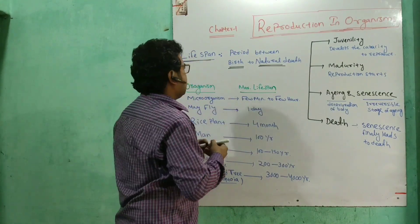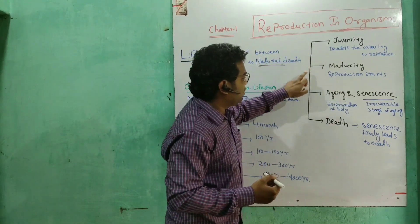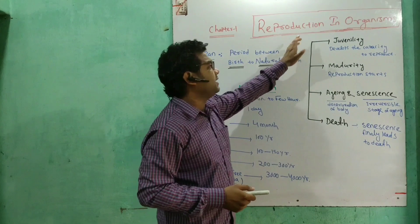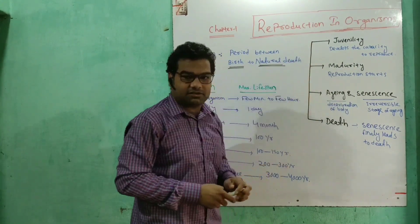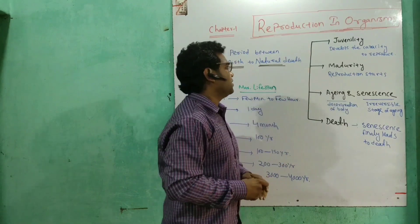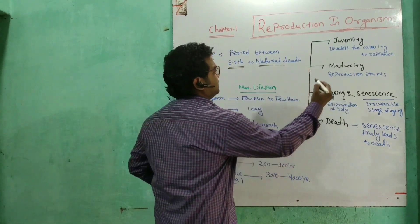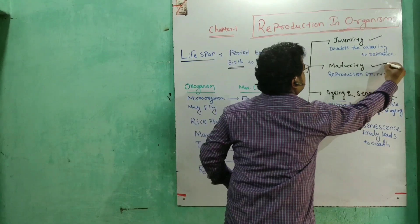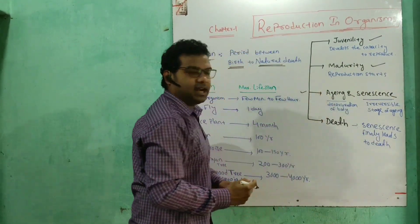Lifespan has different stages. The first stage is juvenility, the second stage is maturity, the third stage is aging, and then senescence.